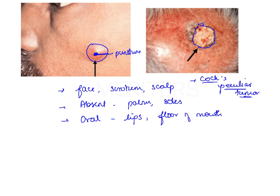The sebaceous cyst originates from blockage of the sebaceous glands and is situated within the dermis — that is the most important point. It can also occur due to implantation of epidermal cells during the embryonal period, in which case it arises from proliferation of trapped epidermal cells within the dermis layer.